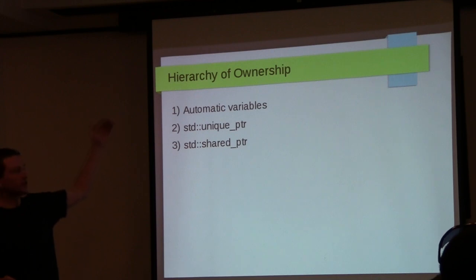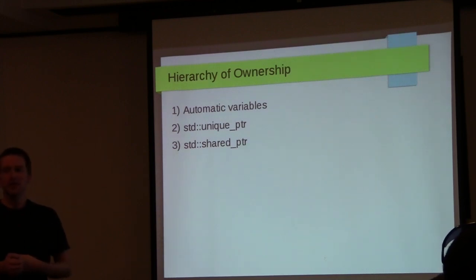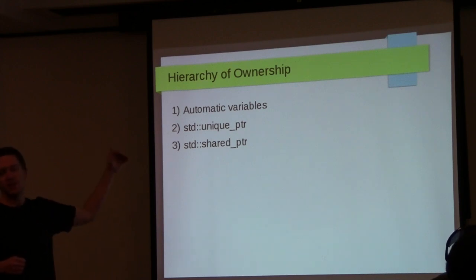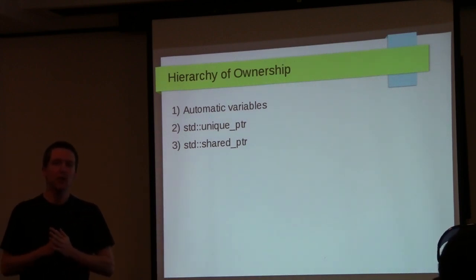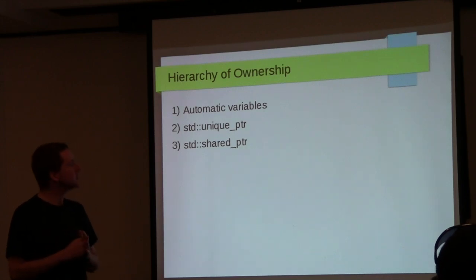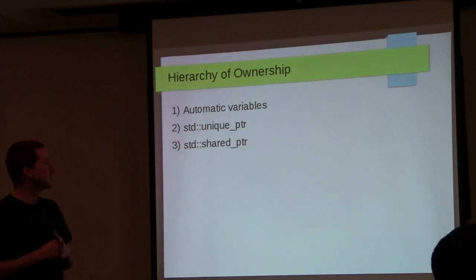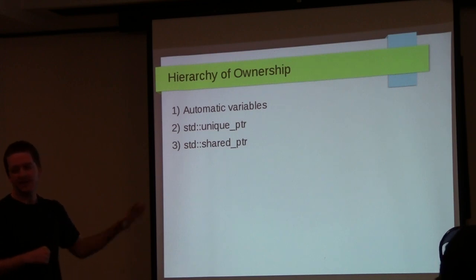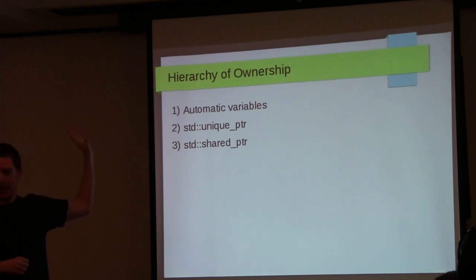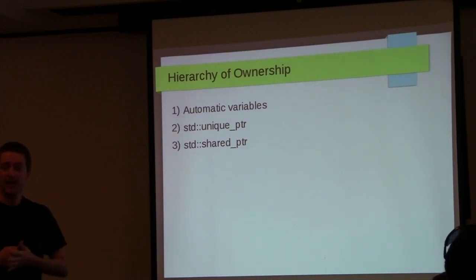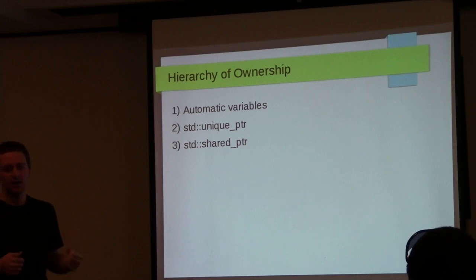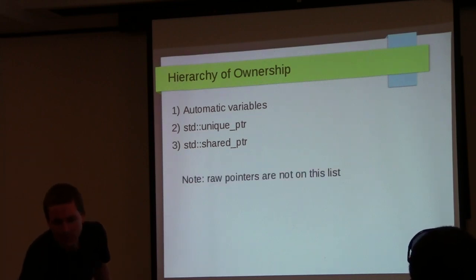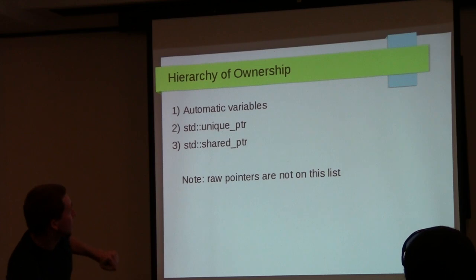A common hierarchy of ownership: prefer automatic variables first, then if you can't use those, unique_ptr, then if you can't use that, shared_ptr. I agree with this advice, but I find that when people give it they don't explain why they're in that order. One important thing: raw pointers are not on this list. In typical code you shouldn't say 'new T' stored in a raw pointer.